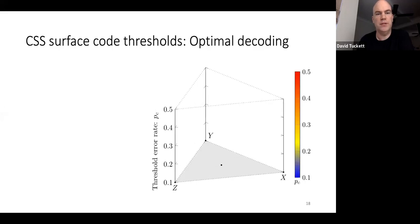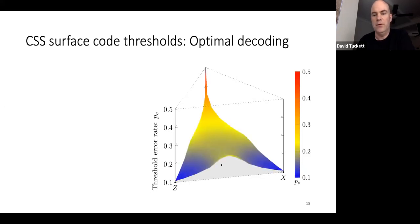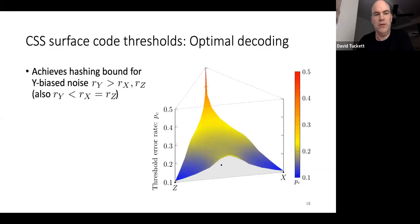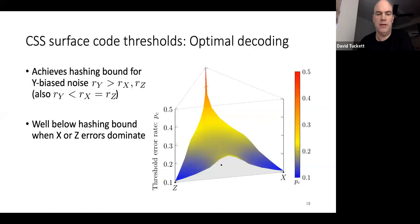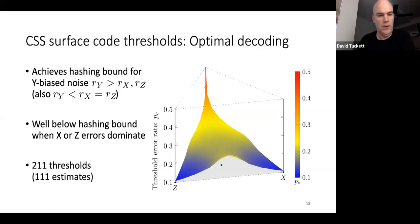For the CSS surface code with optimal decoding over the entire Pauli channel surface, we achieve the hashing bound for Y-biased noise and also when Y errors are absent but X and Z errors are balanced. However, when X and Z errors dominate, the threshold falls well below the hashing bound, down to about 11% for pure X or Z. There are 211 points on that surface — it was quite a lot of simulation, though symmetry reduced the work.